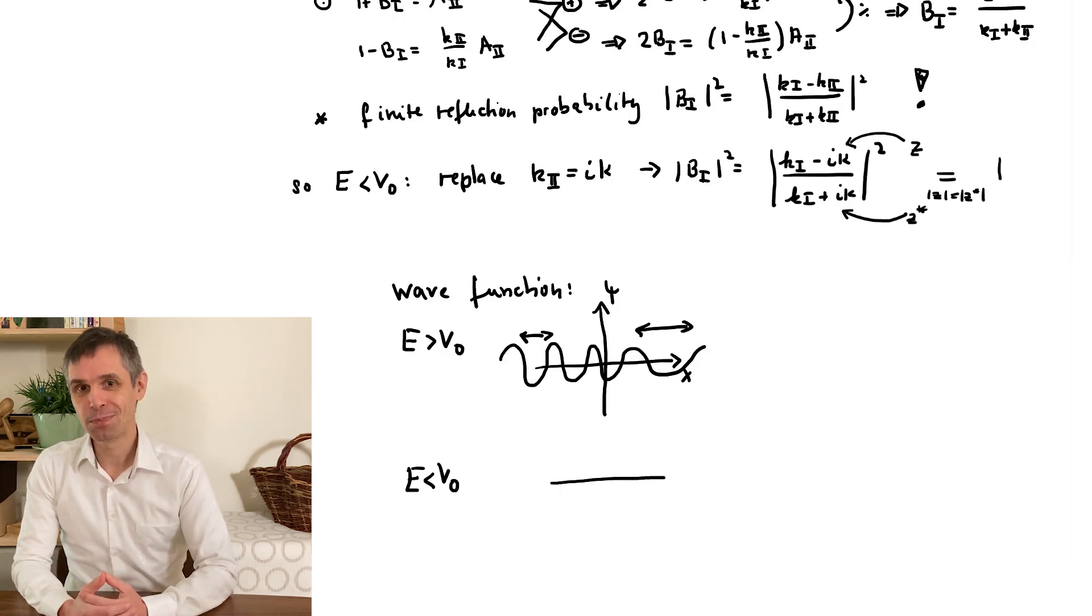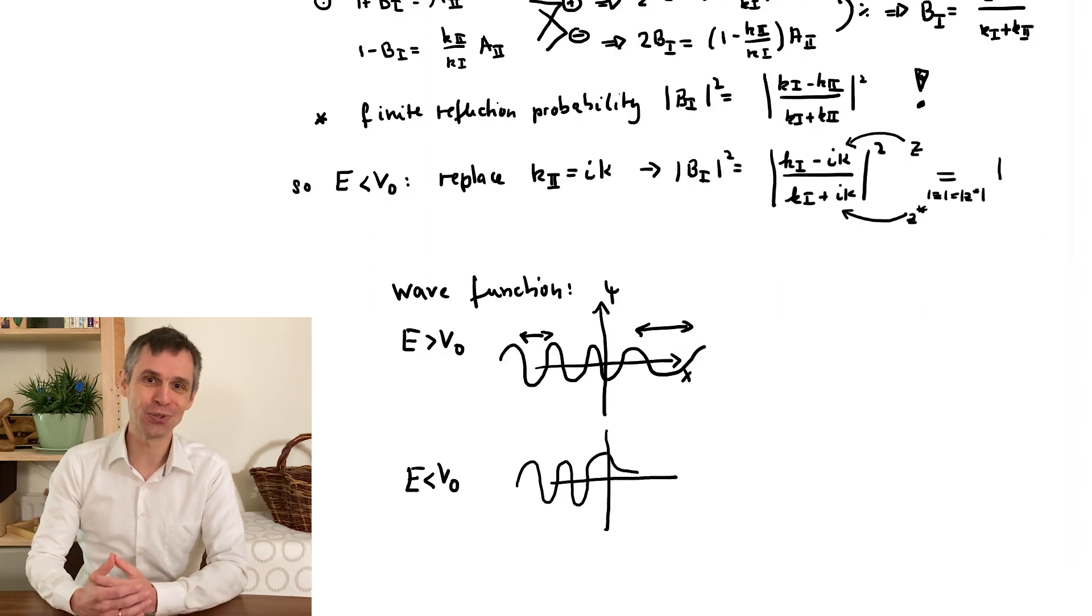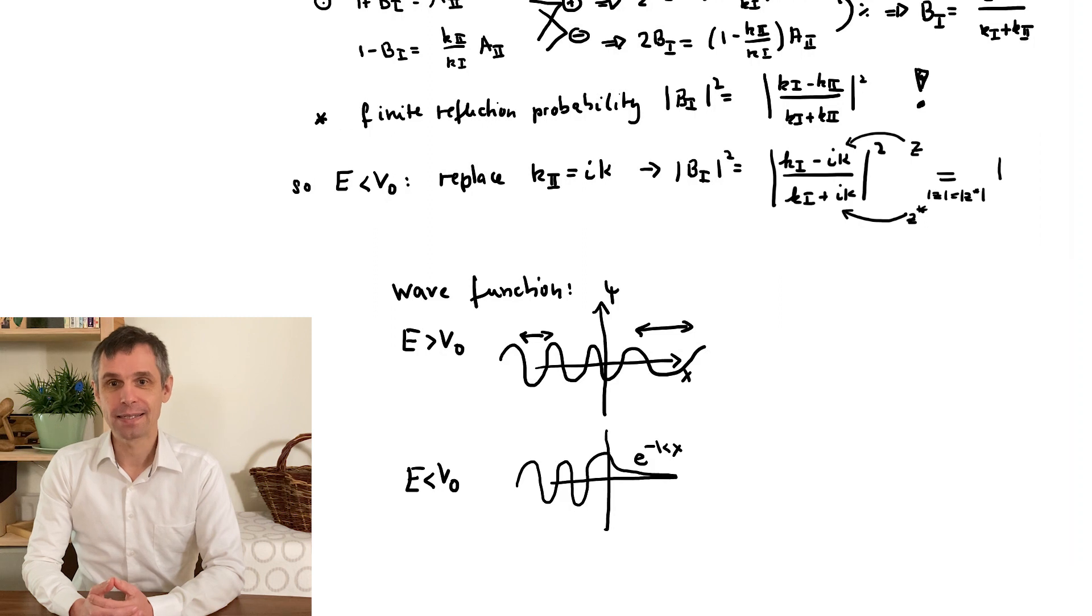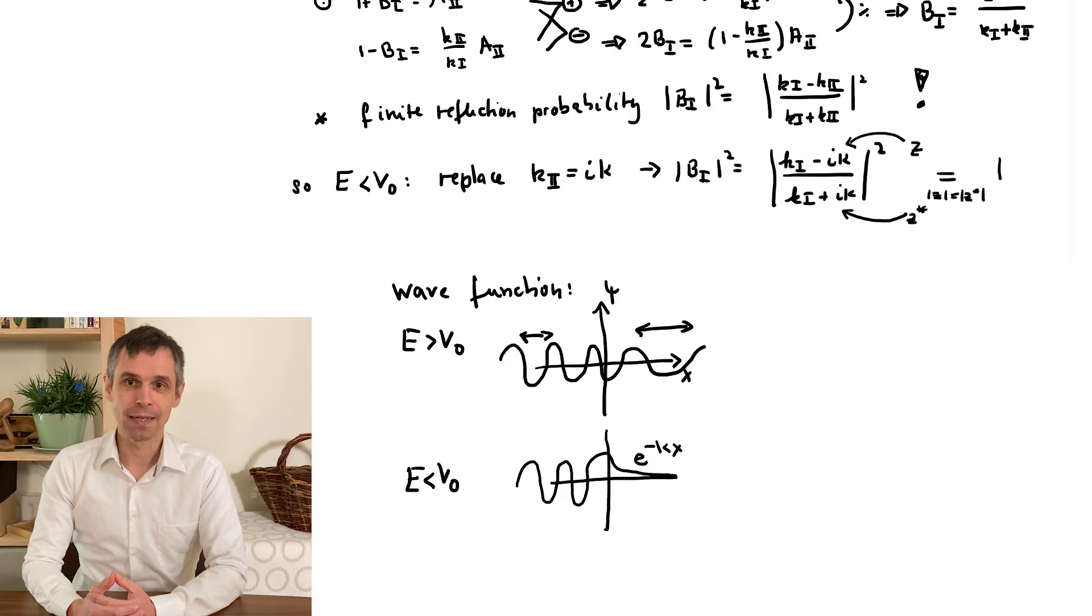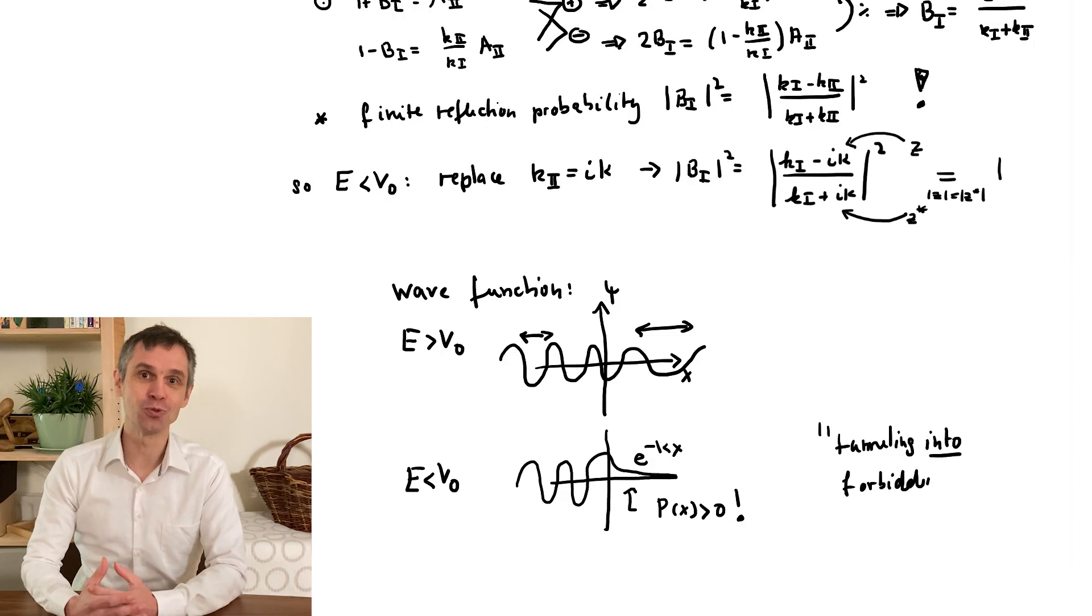In the second scenario, the particle is always reflected, but the solution does not vanish in region 2. It simply decays exponentially. This decay becomes very drastic when we increase the potential energy, and in the limit of a hard wall we approach the case of a vanishing wave function throughout this region. But now the height of the potential matters, and for the soft wall the particle isn't completely confined to the region where it moves classically. We call this phenomenon tunneling into a classically forbidden region.